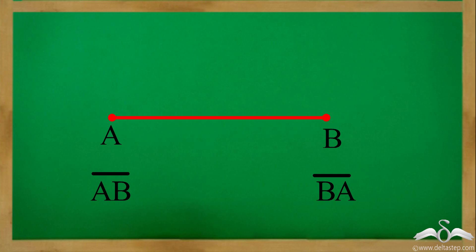Okay, so it does not have arrows on top like a line has. Correct, this signifies that it has endpoints. Points A and B are the endpoints of this line segment.